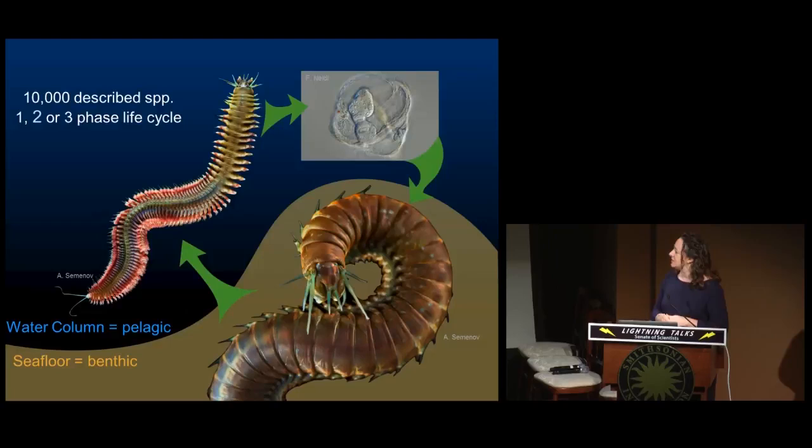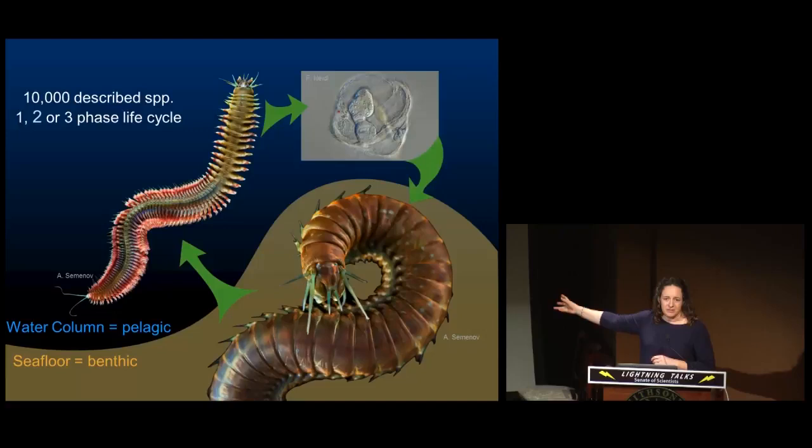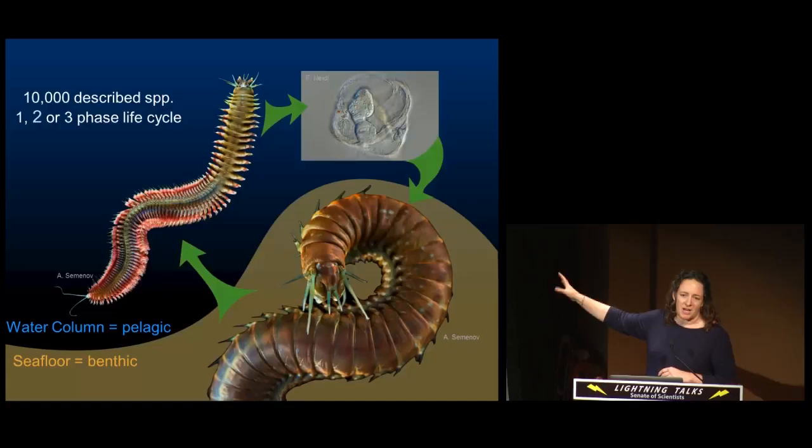The majority have a two-phase life cycle. They start out up in the water column as pelagic larvae. They metamorphose, completely change their body, go down to the sea floor and start their benthic portion of their life. The majority of their time is spent in the benthos.